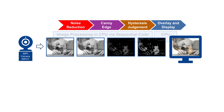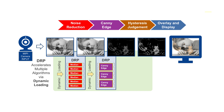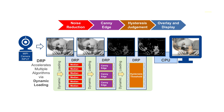The conventional approach to implementing these algorithms is to execute sequential code in the CPU. DRP offers a better way that combines the performance of dedicated IP with the flexibility of software. The demo application software includes the code that turns the DRP into a coprocessor for high-speed execution of each of these algorithms. A process we call dynamic loading configures the DRP as an accelerator for the first algorithm, then reconfigures the DRP for the second algorithm and again for the third.